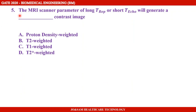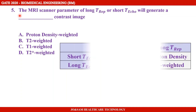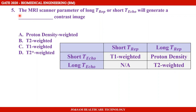Now returning to the question: the MRI scan parameter of long TR and short TE will generate what type of contrast image? With long TR, we can rule out T1 weighted. The combination of long TR and short TE corresponds to proton density weighted image. So the answer is proton density weighted.